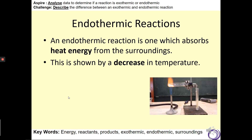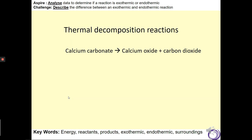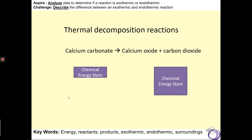Thermal decomposition reactions are a good example that you might have seen in science lessons at school. But photosynthesis is also another example of a reaction that takes in energy. Looking at the thermal decomposition reaction, the calcium carbonate will have a much lower chemical energy store than calcium oxide and carbon dioxide combined. So the reaction will take in thermal energy from the surrounding thermal energy store and convert this into chemical energy.